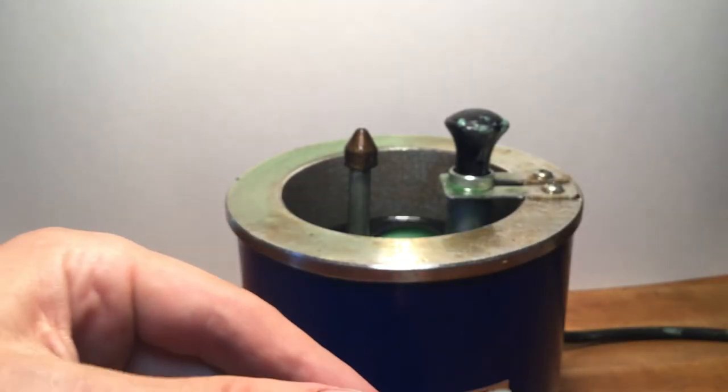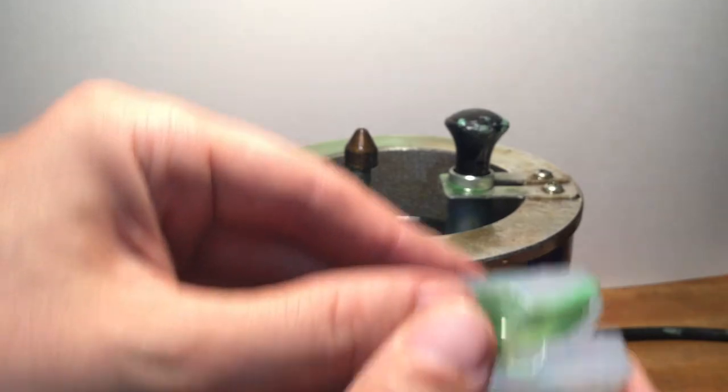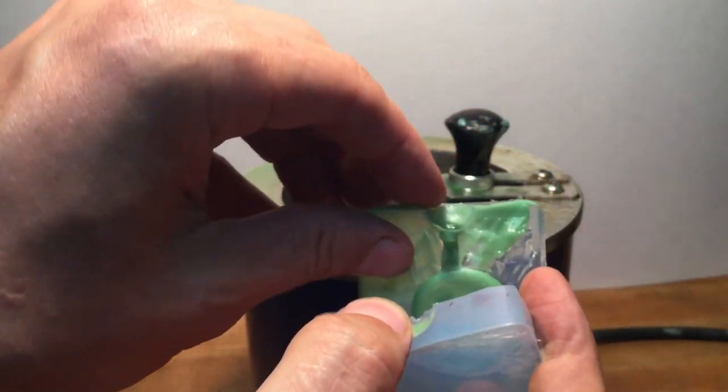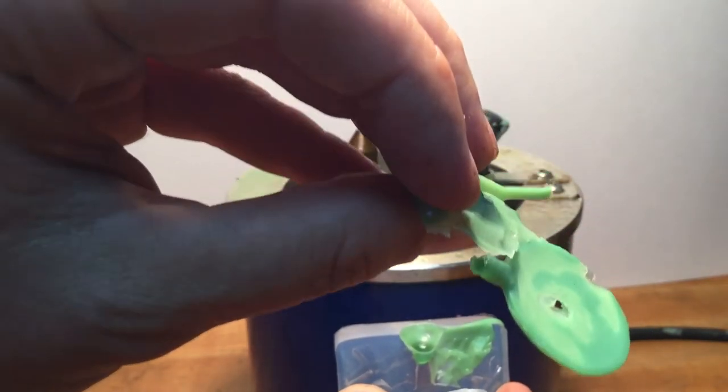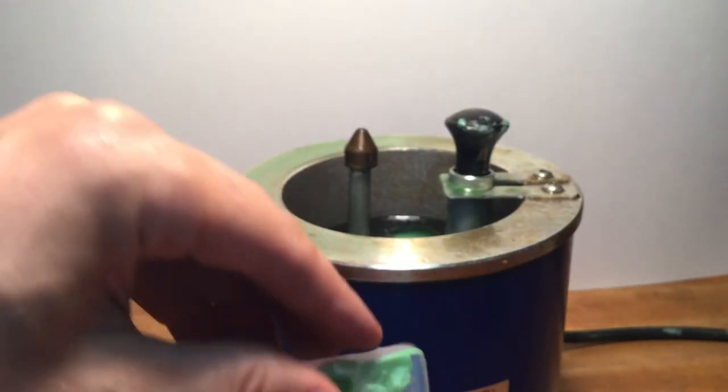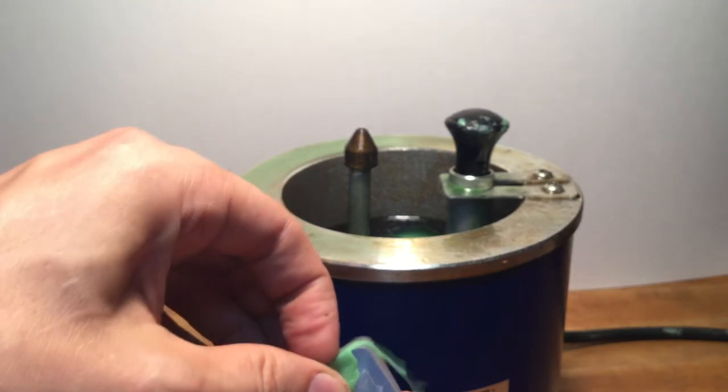So when you pull it out, sometimes what you'll see is your part only cast in like a thin film or a hollow shell. It's not like a full thickness part. You can throw that back into the wax pot and melt it down.